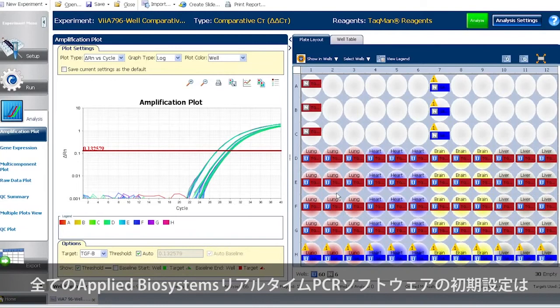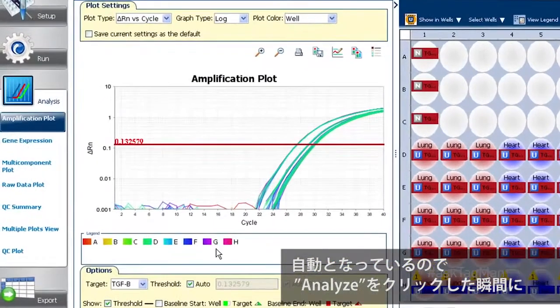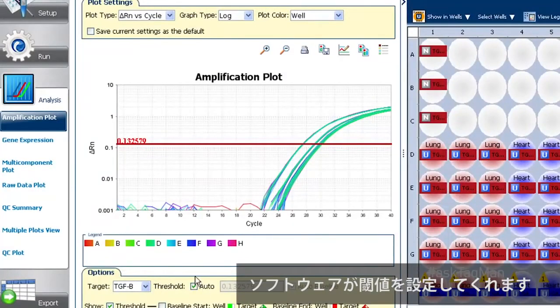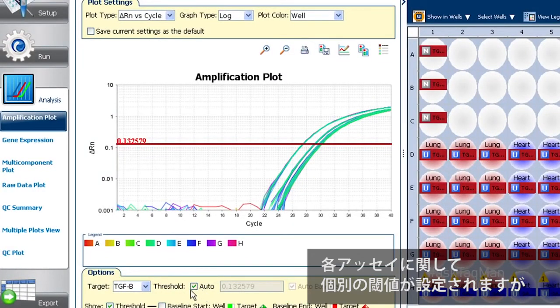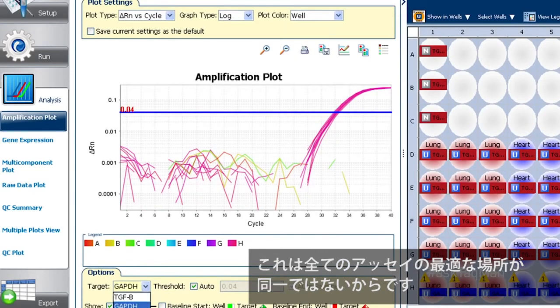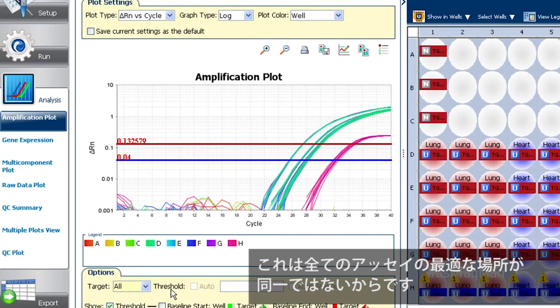The default on all Applied Biosystems real-time PCR software is auto threshold, meaning the software sets thresholds for us the second we click Analyze. Notice that it sets a different threshold for each assay separately, which is good since not all assays have the same sweet spot.